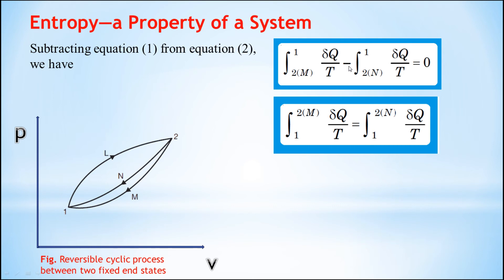Now you can see there is a negative sign, and when the left-hand side term is shifted to the right-hand side it becomes positive. So the simplified result is: the integral from 1 to 2 along path M of δQ/T equals the integral from 1 to 2 along path N of δQ/T — both are equal.